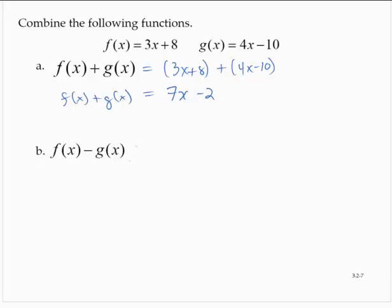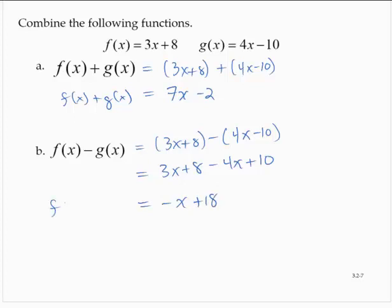f of x minus g of x would be 3x plus 8 minus the quantity 4x minus 10. Now, be careful here when you subtract. Recall that subtraction distributes through the entire second quantity. And so, combining like terms, we would have negative x plus 18 for f of x minus g of x.